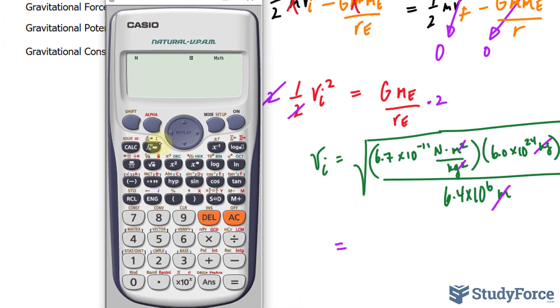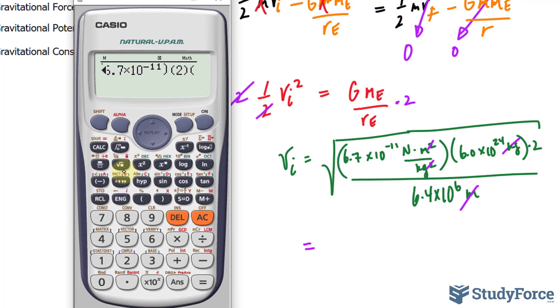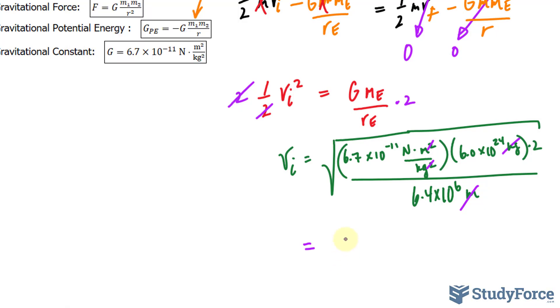Let's use our calculator. The square root of 6.7 times 10 to the power of negative 11 times 2 times 6.0 times 10 to the power of 24, divided by the radius being 6.4 times 10 to the power of 6. We get a velocity of 11,208. I'll write this down in scientific notation: 1.1 times 10 to the power of 4 meters per second.